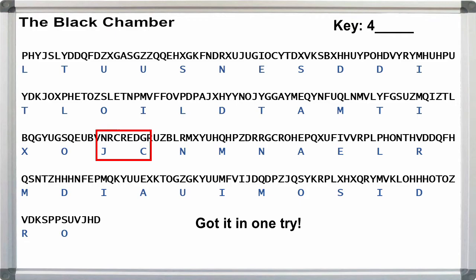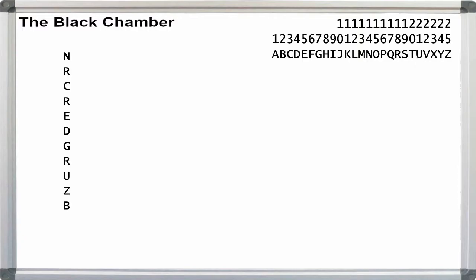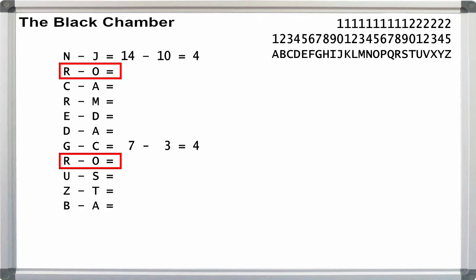Assuming that we have placed the probable word correctly, and there's no guarantee that we have, let's take the 11 letters above the probable word, subtract Yoam da Costa from them, and see what we get. We already know that N minus J and G minus C are both 4. We have R minus O twice, so we can solve for both at one time. R minus O is 18 minus 15 is 3.